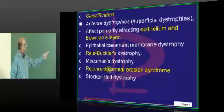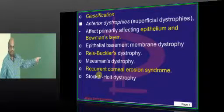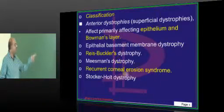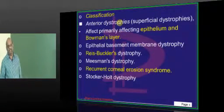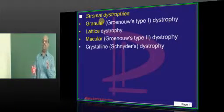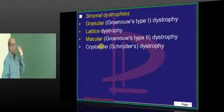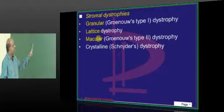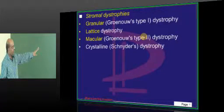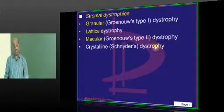Mainly two names to remember for anterior dystrophies: Reis-Bücklers and recurrent corneal erosion syndrome. For stromal dystrophies, remember granular, lattice, and macular. Forget about the Groenouw type 1, type 2 subtypes — unless the examiner is very cruel, he won't ask what is type 2.